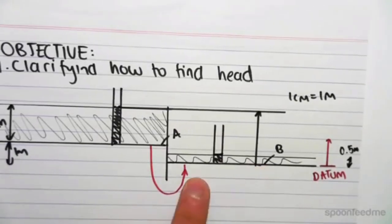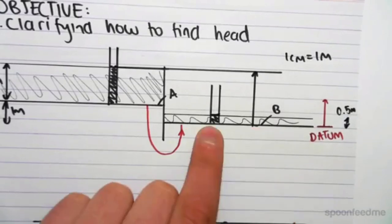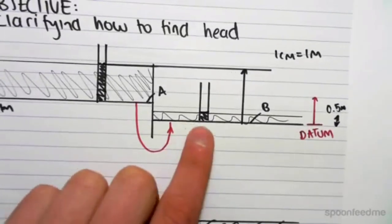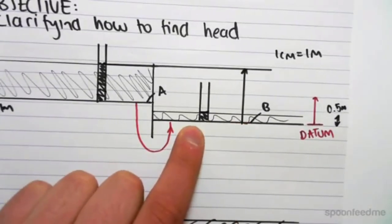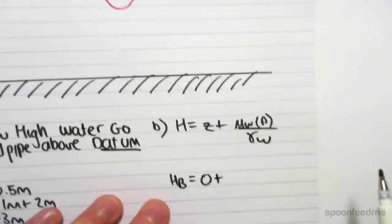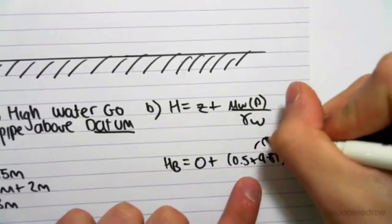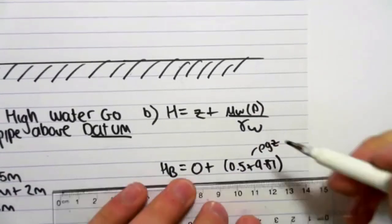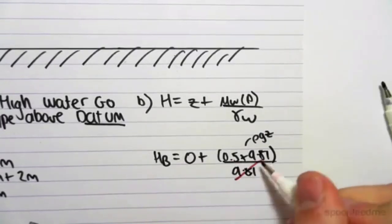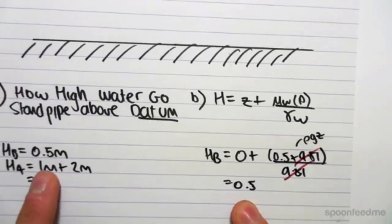So if we were to find the head at B using this method, the head at B would be the height above the datum. So the head, so because we're at the datum, the z value is 0. And the pore water pressure, now because we're at point B, there's water above it, because B is at the bottom here. We have 0.5 meters of water above us. So this would be 0.5 times 9.81. That would give us the pressure of water. This is the same thing as rho gz, hydrostatic pressure, over gamma of water, which is 9.81. So this would cancel out, and we'd be left with 0.5, which is the same value we got for head of B using this method.